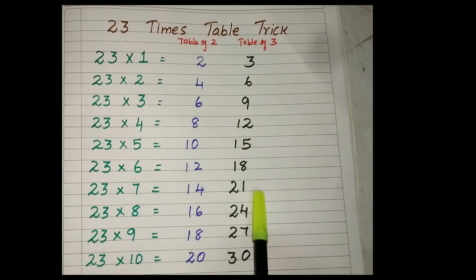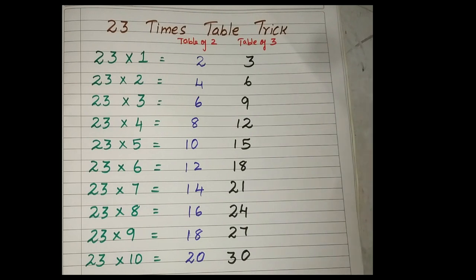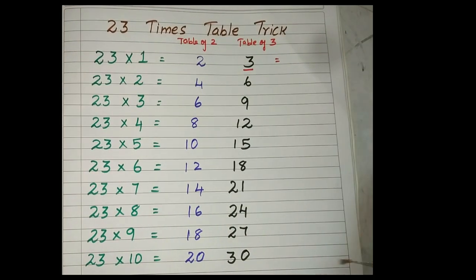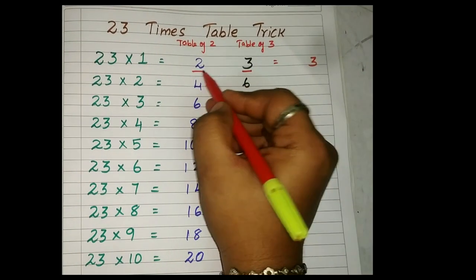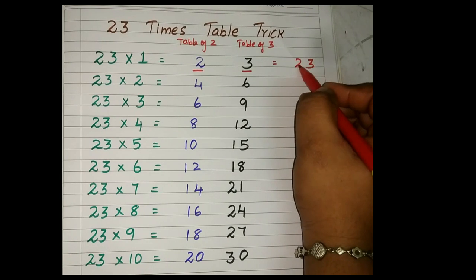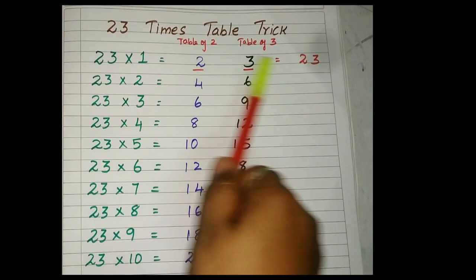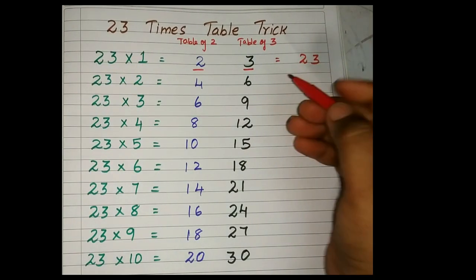Okay, first step what we have done: we have written the table of 2. Second step what we have done: we have written the table of 3. Now we got the 23 times table. What is here? 3, that is your ones digit. What is here? 2, that is your tens digit. 23 ones are 23.